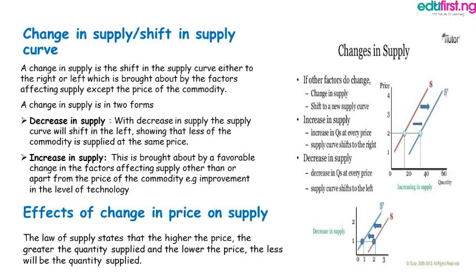Change in supply, or shift in the supply curve, is the shift of the supply curve either to the right or to the left, brought about by factors affecting supply other than the price of the commodity. A change in supply takes two forms: decrease in supply and increase in supply. With a decrease in supply, the supply curve shifts to the left. An increase in supply is brought about by a favorable change in factors affecting supply, apart from price, such as improvements in the level of technology.